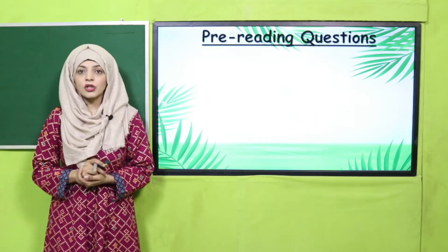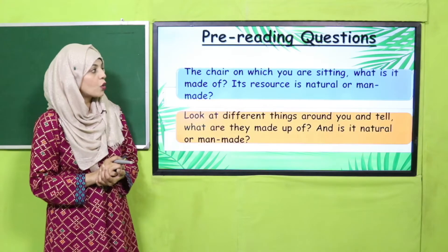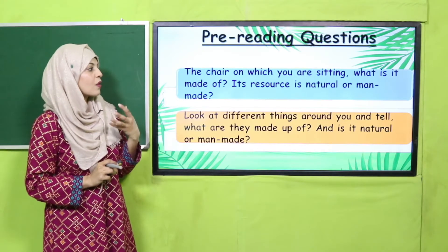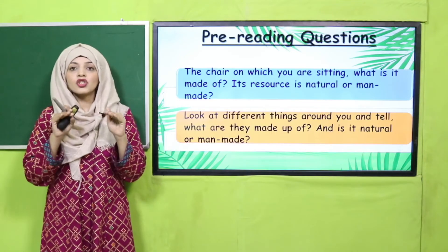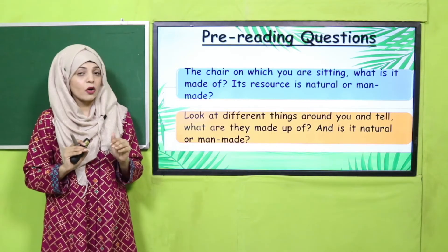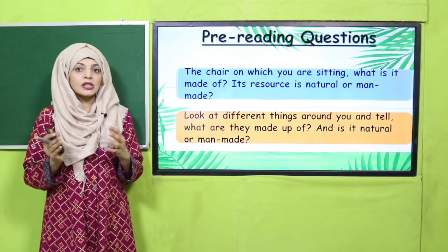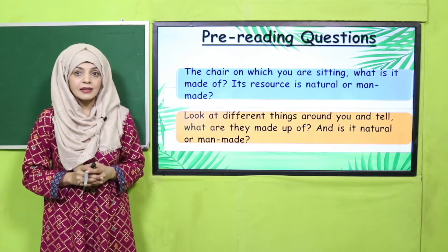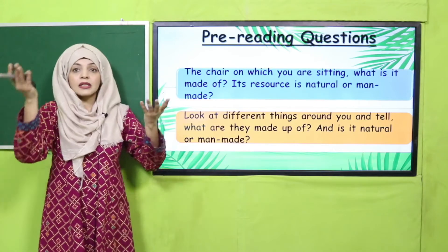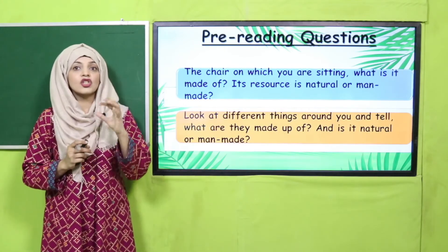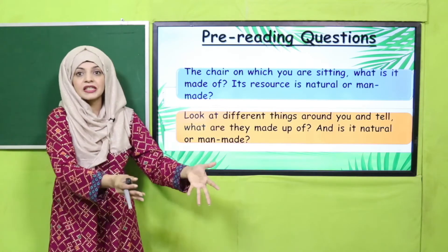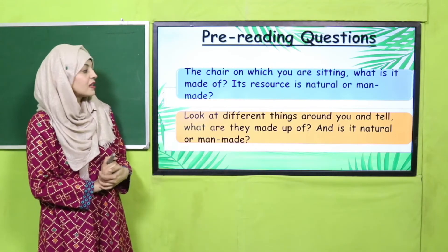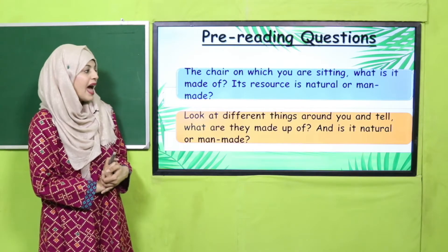Now some pre-reading questions: tell me, the chair on which you are sitting right now — what is it made of? Is its resource natural or man-made? Maybe wood. So tell me, is wood man-made or natural? Wood is natural, of course, because it comes from the tree, and the tree is natural. So the chair you are sitting on is made from a natural thing — we made it for you from a natural material.